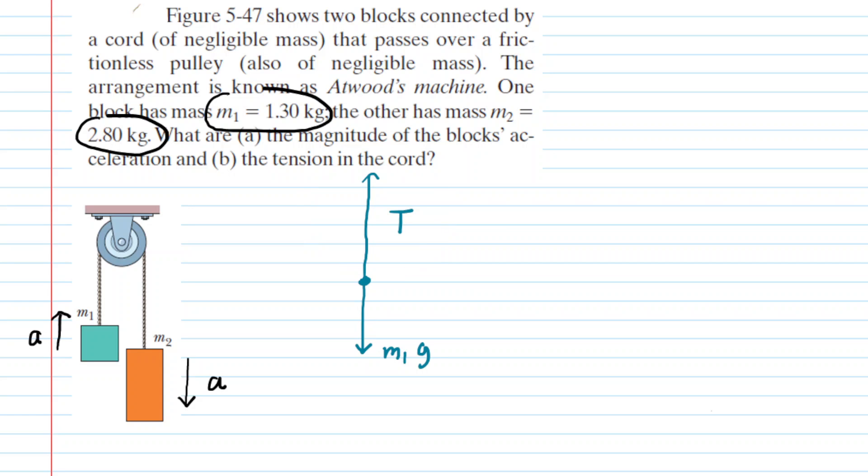We move over to block 2. We will draw a similar-looking free body diagram, except this time the gravitational force on M2 will be larger than the tension force, because as stated earlier, block 2 is accelerating downward, so there has to be an unbalanced force pointing downward acting on block 2.